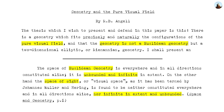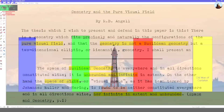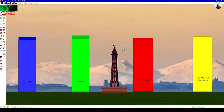Richard Angle was also convinced that vision was not Euclidean. He says: 'There is a geometry which fits precisely and naturally the configurations of the pure visual field, and that geometry is not Euclidean but a two-dimensional elliptic or Riemannian geometry.' The space of Euclidean geometry is everywhere constituted alike — unbounded and infinite in extent. On the other hand, visual space is found to be neither constituted alike in all directions nor infinite and unbounded. Angle is saying that visual space has natural limitations which must be taken into account, whereas Euclidean geometry, including in 3D modeling tools, has no such limitations — it fails to deal with the vanishing point and so continues into infinity, producing unfaithful renderings.